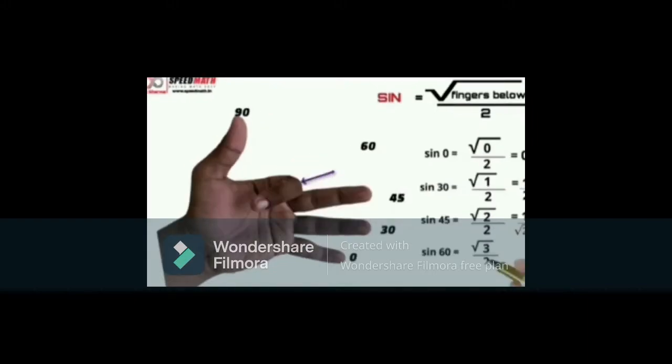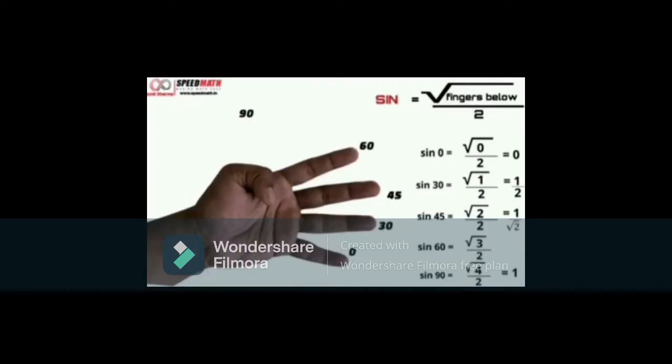Now let's find out the value of sine 60. The number of fingers below index finger is 3. So by the formula, the value of sine 60 is root 3 by 2. Now let's find out the value of sine 90. The number of fingers below the thumb is 4. So by the formula, the value of sine 90 is root 4 by 2, that is 1.